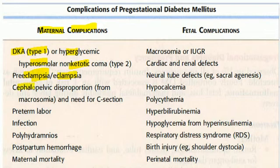Cephalopelvic disproportion, because of macrosomia, which necessitates caesarean section. Preterm labor, which can lead to infection. Polyhydramnios, postpartum hemorrhage, and maternal mortality.